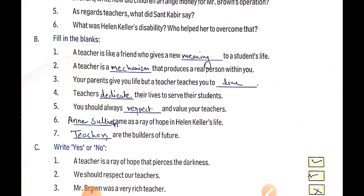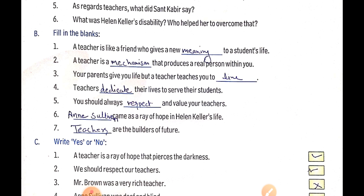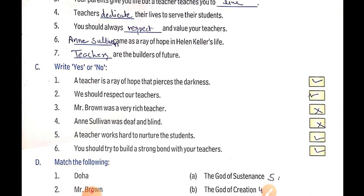Fourth: Teachers dedicate their life to serve their students. Fifth: You should always respect and value your teachers. Sixth: Annie Sullivan came as the role of hope in Helen Keller's life. Seventh: Teachers are the builders of futures.